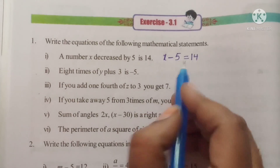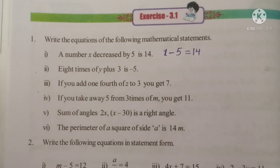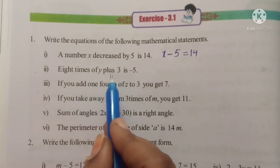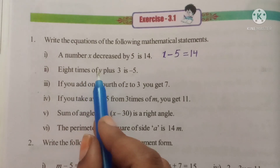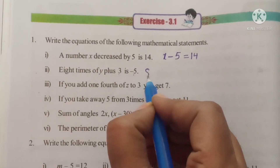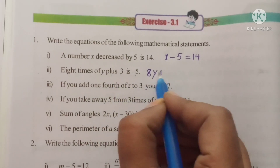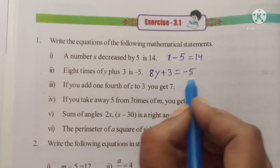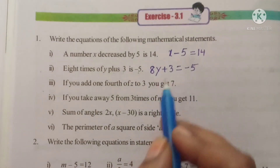The equation will be x minus 5 is equal to 14. Now let's see the second one. 8 times of y plus 3 is minus 5. So 8 times of y means 8 into y plus 3 is minus 5. The equation is 8y plus 3 is equal to minus 5.